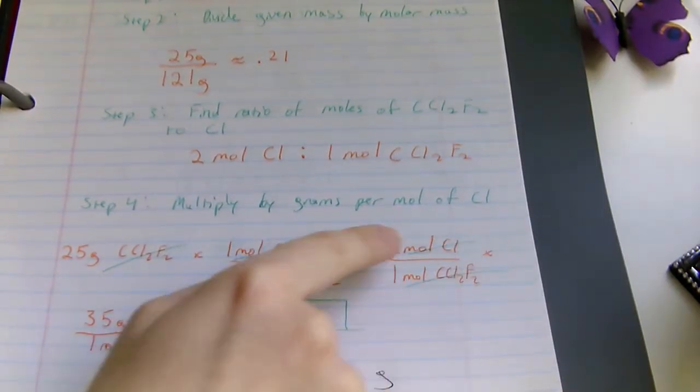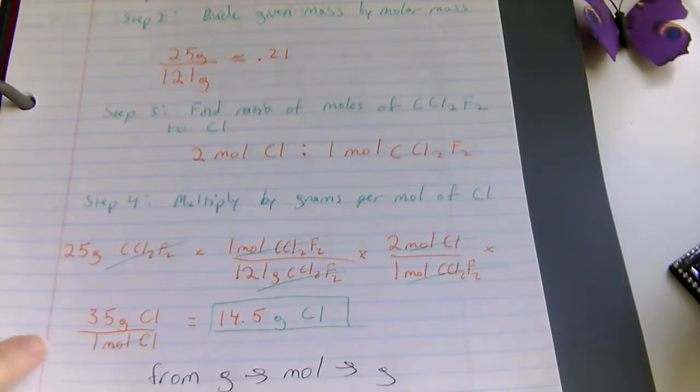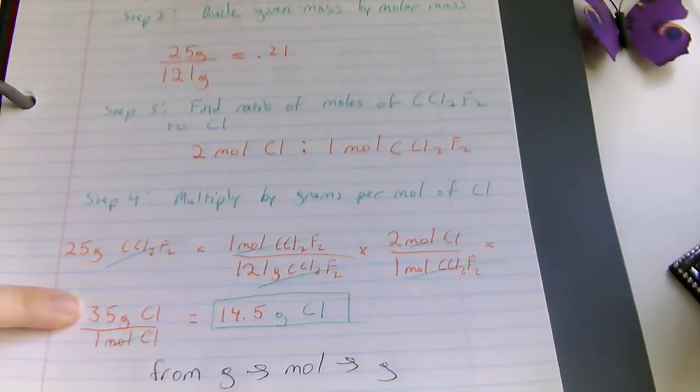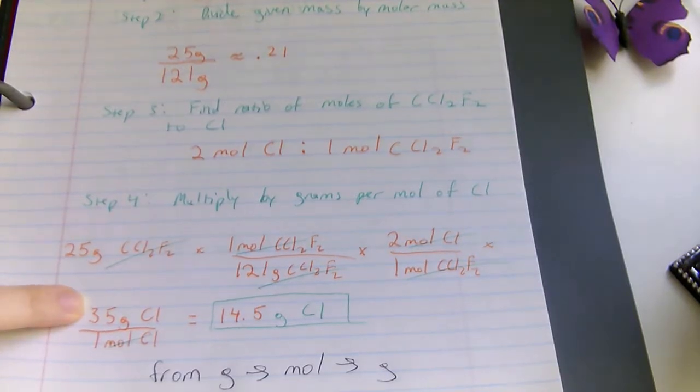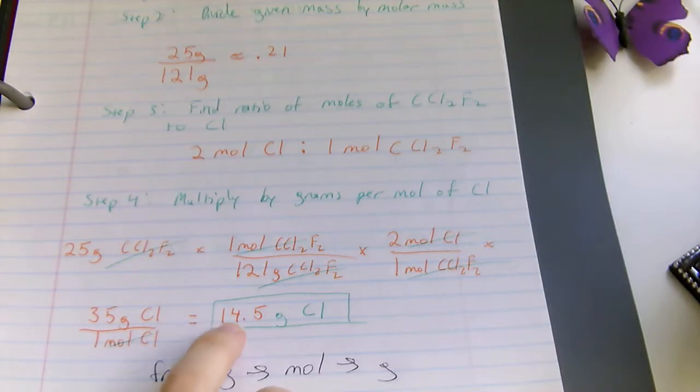Again, we're canceling out units, and the last one we're canceling out is moles, and we need to know grams. So we put one mole in the denominator, as it relates to 35 grams of chloride in the numerator. Multiplying the whole thing across, you'll be left with 14.5 grams of chloride.